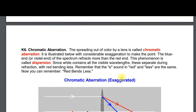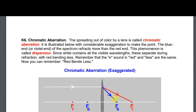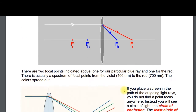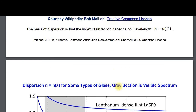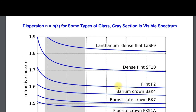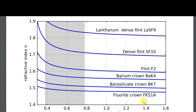Chromatic aberration: blue bends more than red. Red bends less. Here is dispersion showing blue bends more, red bends less. The index of refraction is higher for blue in the visible spectrum.